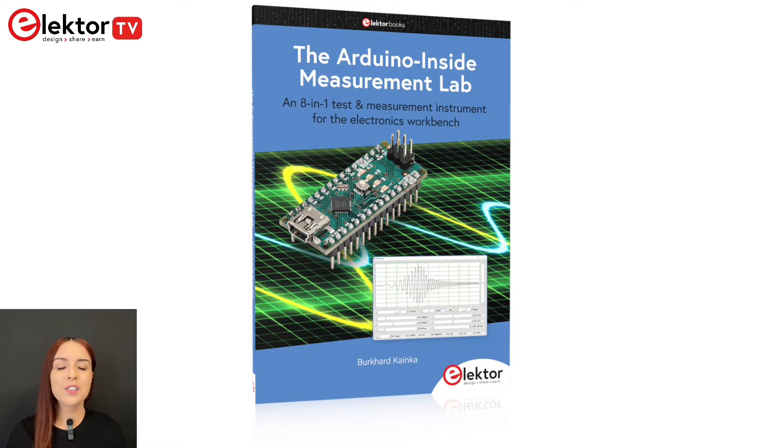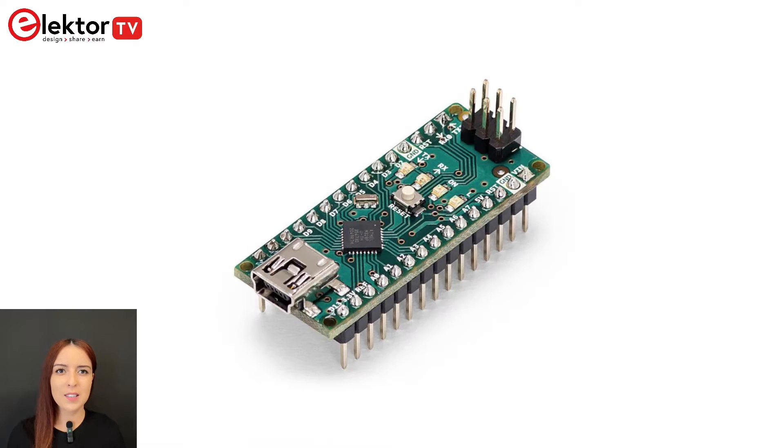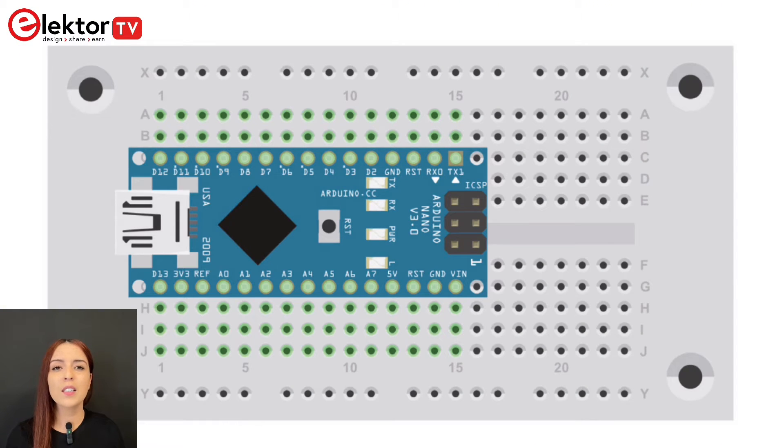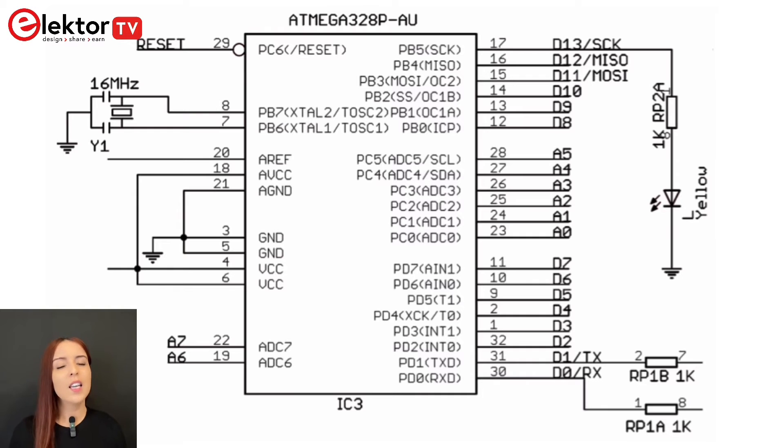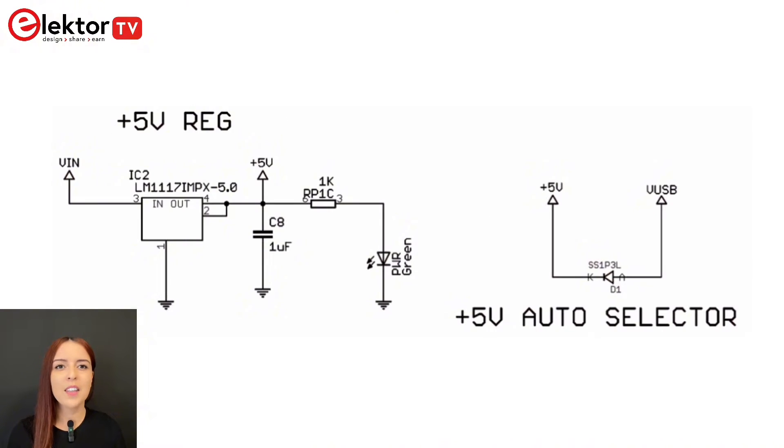The first chapter introduces the first considerations for a universal measuring system, focusing on a digital PC oscilloscope combined with a signal generator. It discusses the choice of the controller, the Arduino Nano, and the necessary supply voltage configurations.